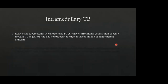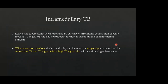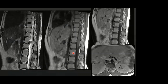Intramedullary TB is also rare but can be seen. The early stage is a non-specific myelitis with uniform enhancement. When caseation develops, the lesion displays a characteristic target sign: central low T2 and T1 signals with a high T2 signal rim and either vivid or ring enhancement. On these images, a rounded T2 hypointense lesion involving the conus medullaris is shown with a subtle rim of T2 hyperintensity in the periphery, diffuse cord edema, iso-to-hypointense appearance on plain T1, and ring enhancement on post-contrast sequences — an intramedullary tuberculoma.